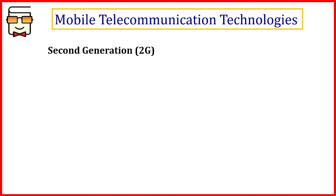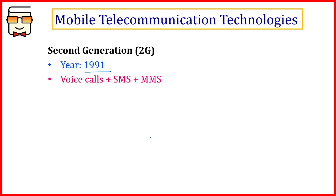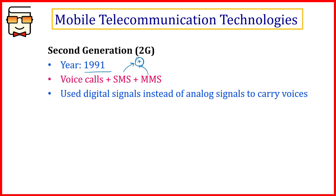After 1G came the second generation, 2G, around the year 1991. The significant difference was that apart from voice calls, we also got SMS — Short Message Service — and MMS, which is Multimedia Message Service. Both of these were new add-ons to the voice call facility. The major technical difference was the use of digital signals instead of analog signals to carry voice.